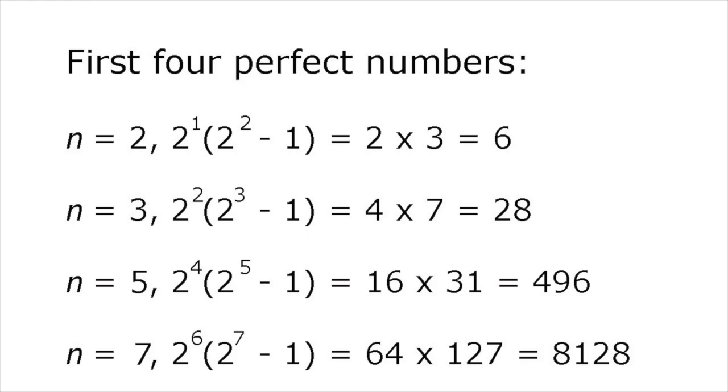For n equals 5, 2 to the 4 times 2 to the 5 minus 1 is 496. And for n equals 7, 2 to the 6 times 2 to the 7 minus 1 is 8,128.